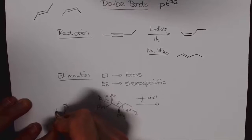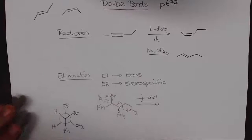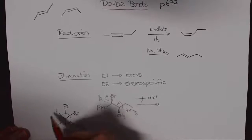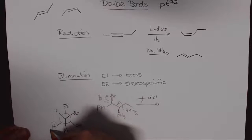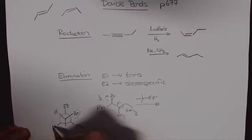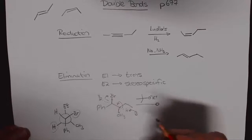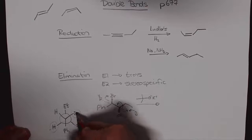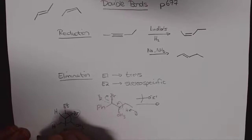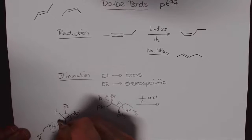So when we drawn out our Newman projection this proton, this halogen are the ones that are leaving. In its current conformation that we've drawn out over here which happens the way I drew it out in the beginning, they are anti-periplanar to each other.